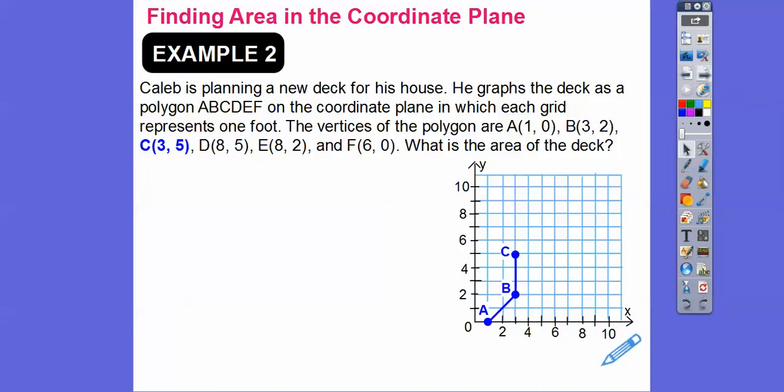Over three, up five. Over eight. So over eight would be, so I'm right here. I'm going to highlight this in blue. So over eight, up five. So there's that right there. And then over eight, up two. And then finally, over six, up zero. And then close it up right there. And we're going to find the area.